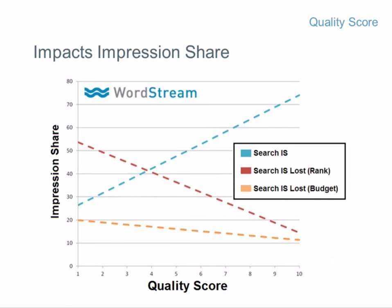If you're not yet convinced that quality score matters, consider impression share — the market share of your ads for certain keywords. Just because you specify keywords doesn't mean Google will actually show your ads. The better the quality of the ad, the more likely your ads will show up. As your quality score increases, impression share increases pretty linearly — for every increase or decrease in quality score, you can expect about a 9% increase or decrease in impression share.